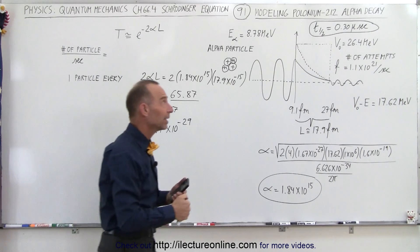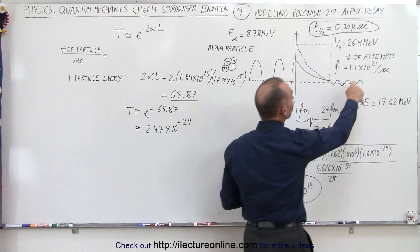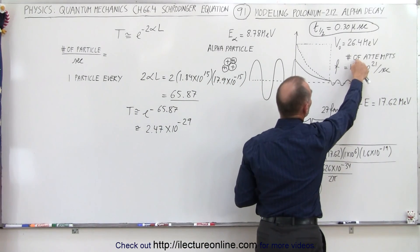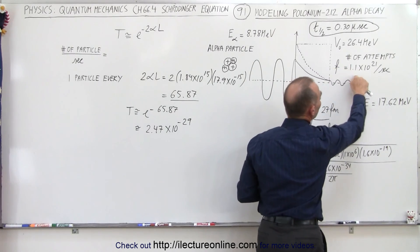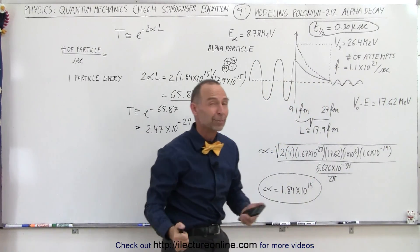Now however, we've got to keep in mind that there's a very unstable nucleus and an alpha particle will try to break through the barrier 1.1 × 10^21 times per second.